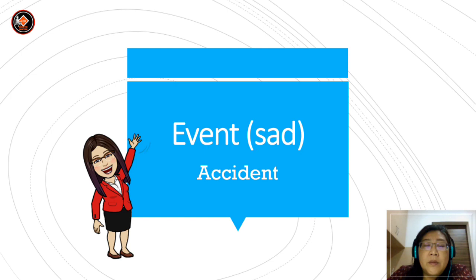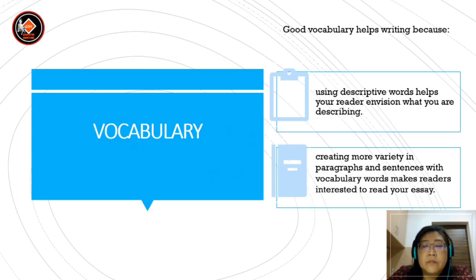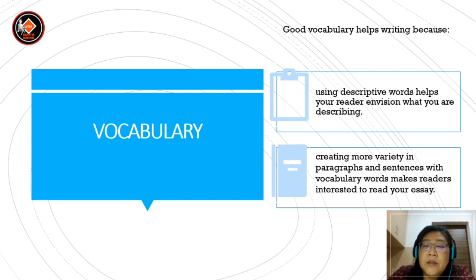Today we are going to learn about how to write an event which is a sad event — it is about an accident. Before you start, you need to look at the vocabulary. Good vocabulary helps writing because using descriptive words helps your reader envision what you are describing so they can have a picture of what you are trying to describe. Creating more variety in paragraphs and sentences with vocabulary makes readers interested to read your essay.